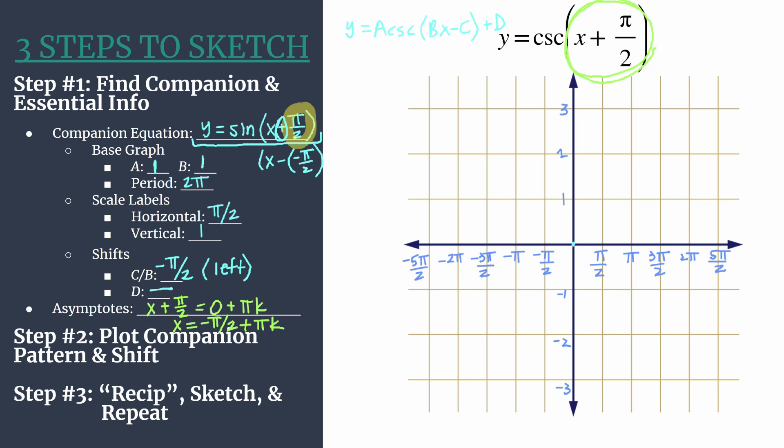Recall a sine pattern is just going to be starting at the origin with a zero or an x-intercept, up to a maximum, another x-intercept, and then a minimum. So let's mark these lightly. We start at the origin. Our maximum happens at that first horizontal tick mark, and the y value comes from our value a. So we see our y value is going to be positive one. We have another zero at the next horizontal tick mark. And then we have, at the third one, a minimum. The y-coordinate comes from the opposite value of a. So this is the unshifted companion equation.